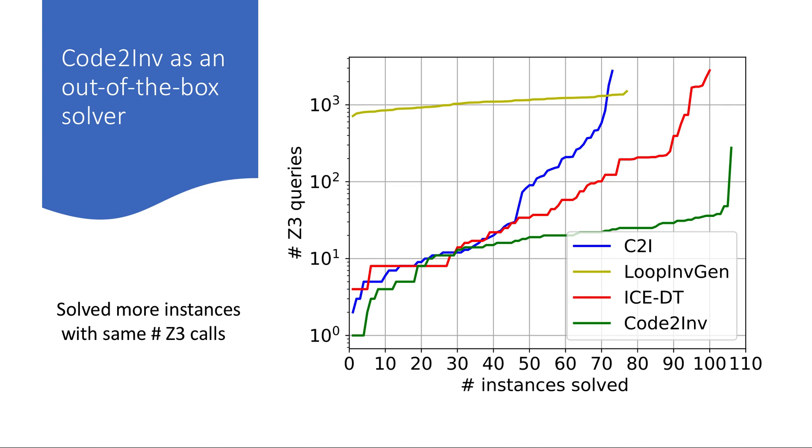We first treat Code2Inv as an out-of-the-box solver for a particular program. Overall, our method solves more instances with fewer number of Z3 calls. We can also solve comparable number of instances within one hour time limit.